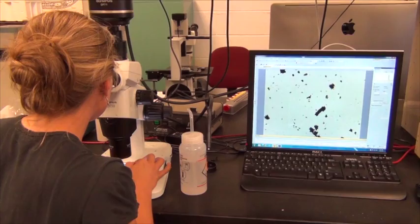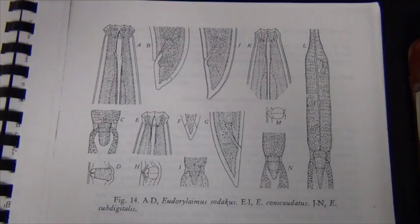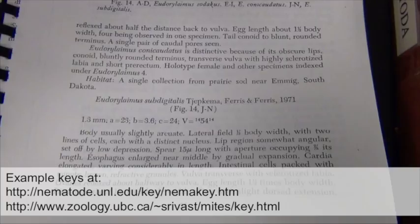Researchers like Ashley are experts at identifying different soil fauna. But for those of us who aren't yet trained, keys are the place to start. Check out some of these keys to see the type of anatomical structures that are used to distinguish between different species.